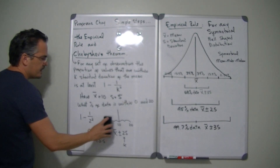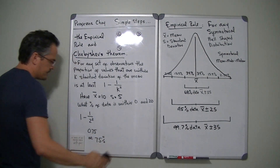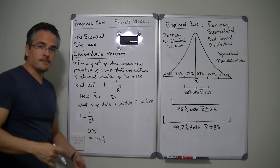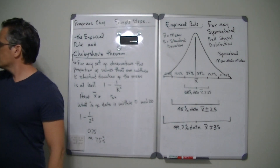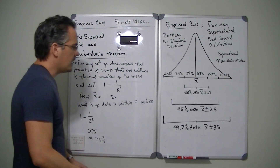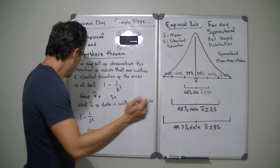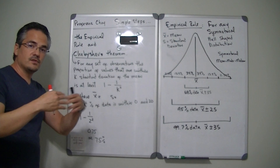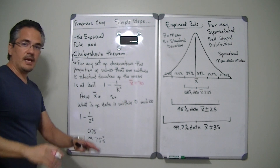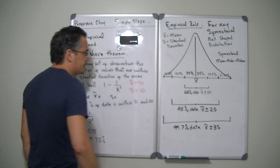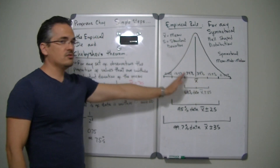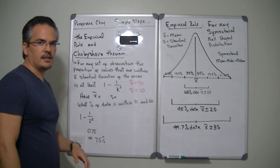Let's come up with a different example in an education context. Imagine I gave my students an exam and the average grade, which is my x-bar, is 70, and my standard deviation for that exam is 10. Now I don't know whether my data is symmetrical or not — I haven't done any studies for symmetry. And I want to know what percent of my students scored within two standard deviations away, which would be between 50 and 90.